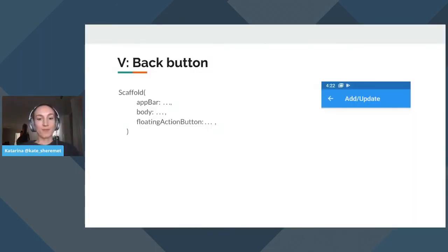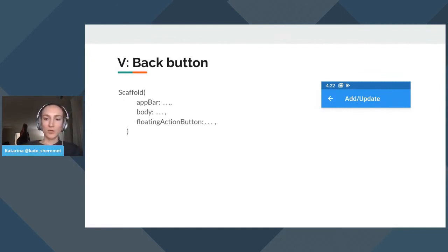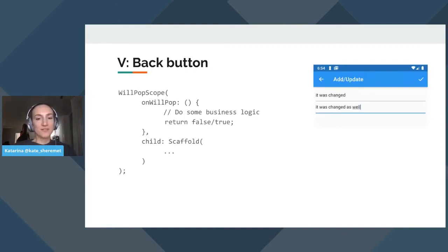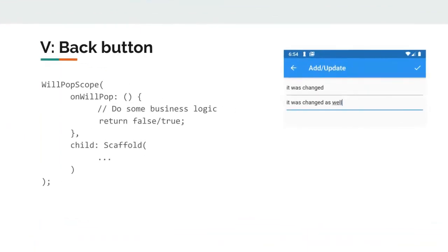The next topic is the back button. The back button is handled by Scaffold — a Flutter feature that implements a basic Material Design visual layout structure, providing API for showing drawers, snack bars, floating action buttons, etc. To add business logic when the back button is pressed, we need to wrap the Scaffold widget with a WillPopScope widget and implement the onWillPop callback. onWillPop must return true or false: if true, the current screen closes; otherwise it doesn't. One mistake here is to trap the user and prevent them from going back — for example, if validation fails.